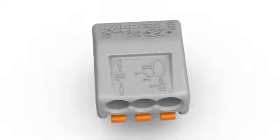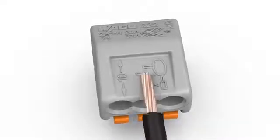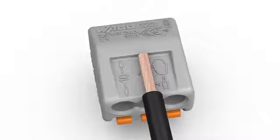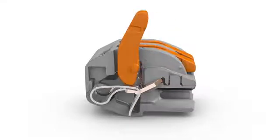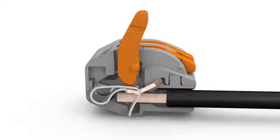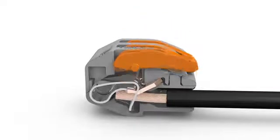Wiring is very easy. Strip conductor to 9 to 10 millimeters or 0.37 inches. Open clamping unit via integrated lever and insert conductor. Then lower lever to close the clamp.